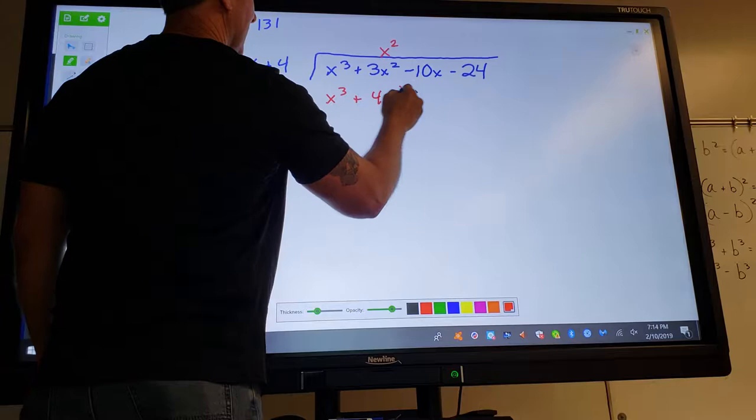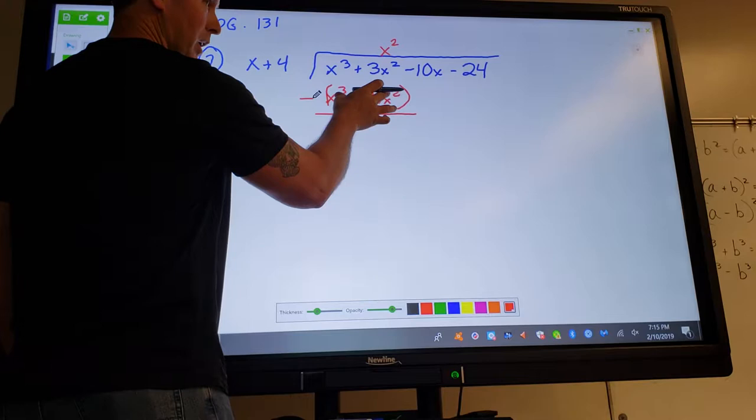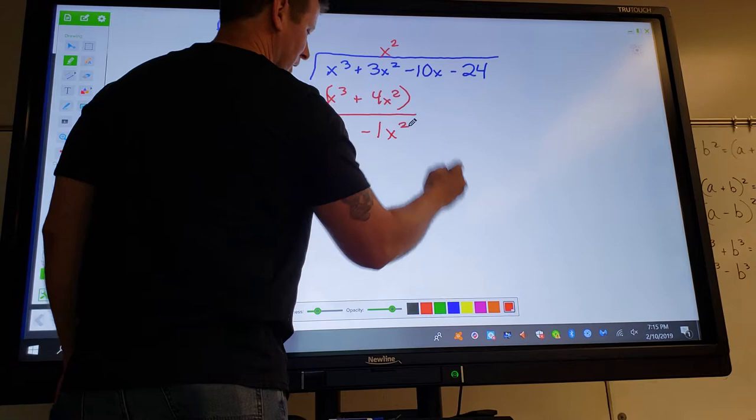And then I'm to subtract that quantity. Remember, this is a quantity, a binomial, so the negative has got to go to both terms. And hopefully you got negative one x squared when you did the math.